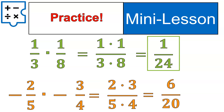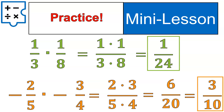Multiply top times top: two times three gives six. Bottom times bottom: five times four gives 20. Then simplify six-twentieths down to three-tenths by dividing both numerator and denominator by two — six divided by two is three, twenty divided by two is ten. Two is the greatest common factor. Three-tenths is the final answer.